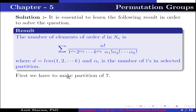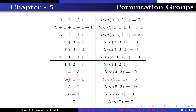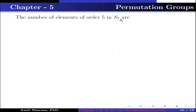To find elements of order 5 in S7, we first make partitions of 7. The partition 5 + 1 + 1 has LCM equal to 5, meaning S7 contains elements of order 5 from this partition. The number of such elements is 7! divided by (5 · 1² · 1! · 2!), because the 5-cycle appears once and the 1-cycle appears twice. This equals 504. Therefore, the number of elements of order 5 in S7 is 504.